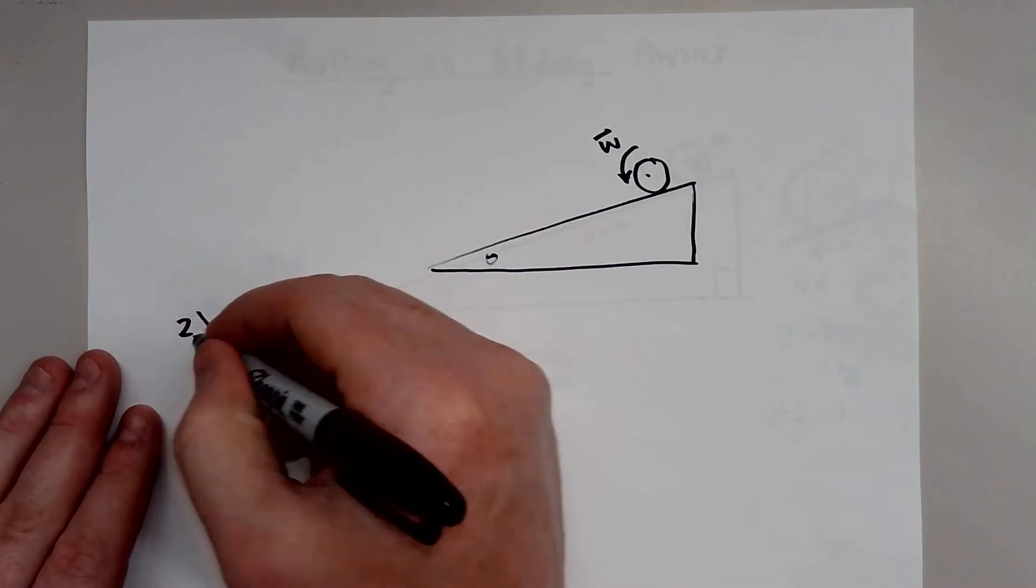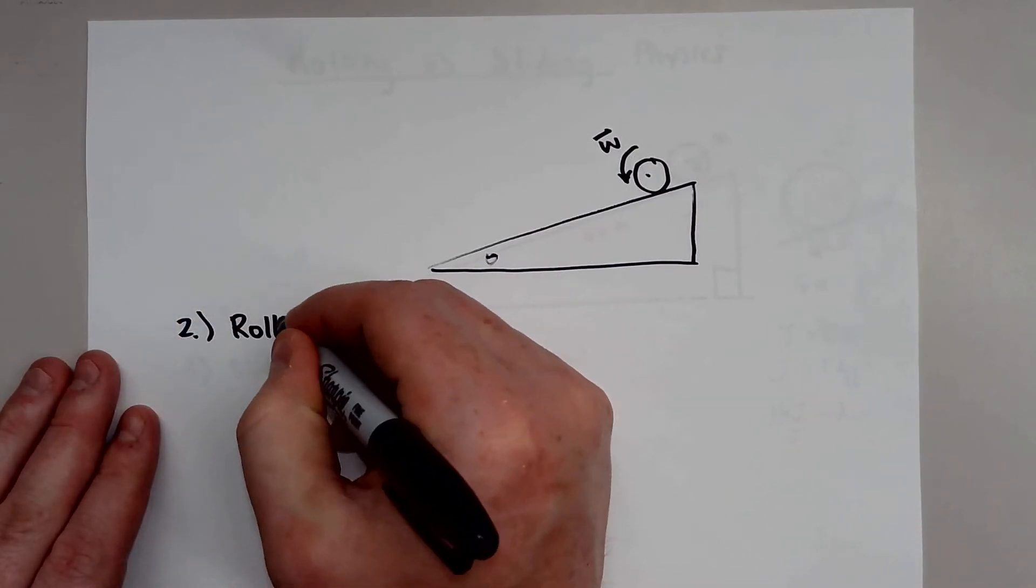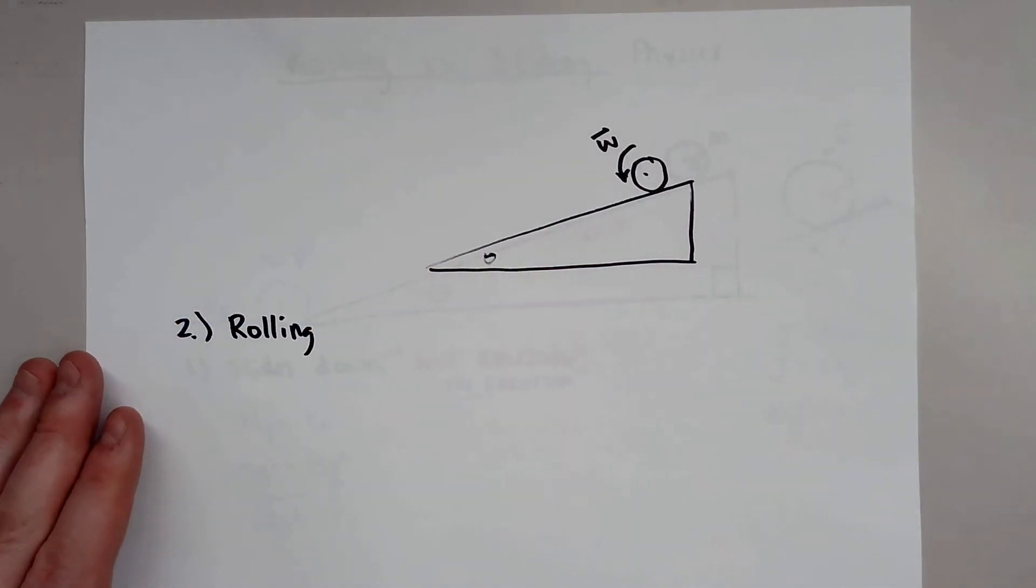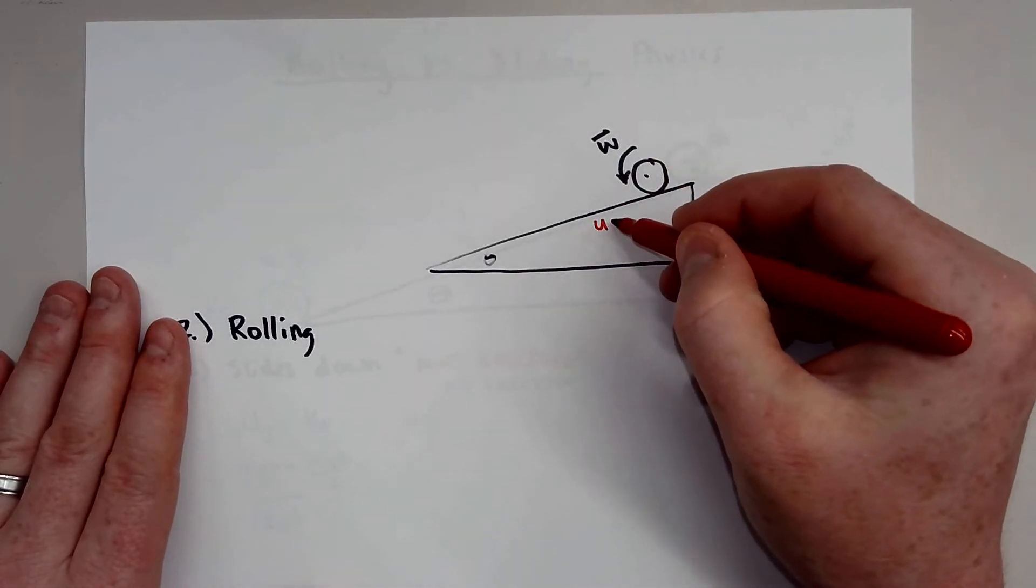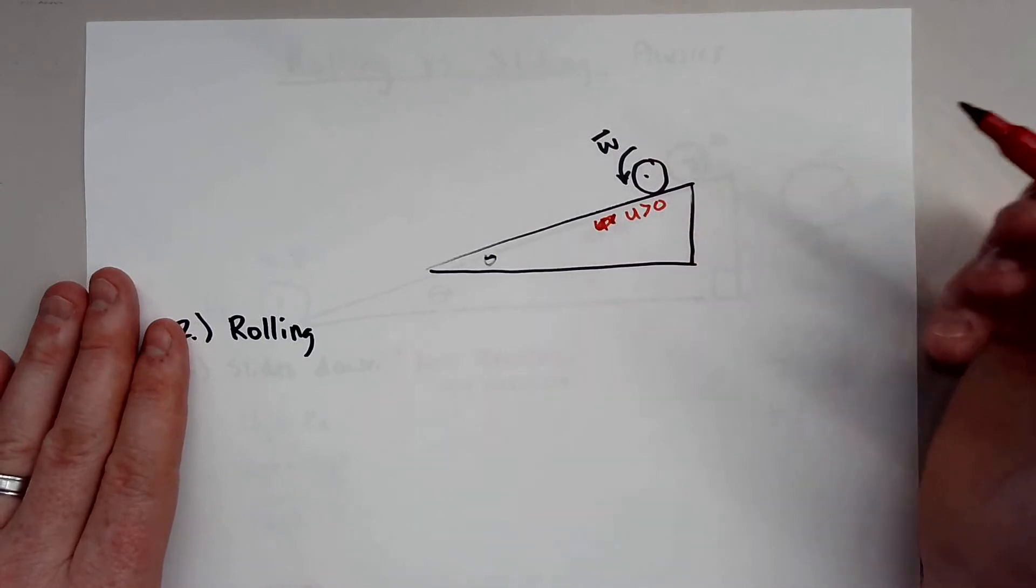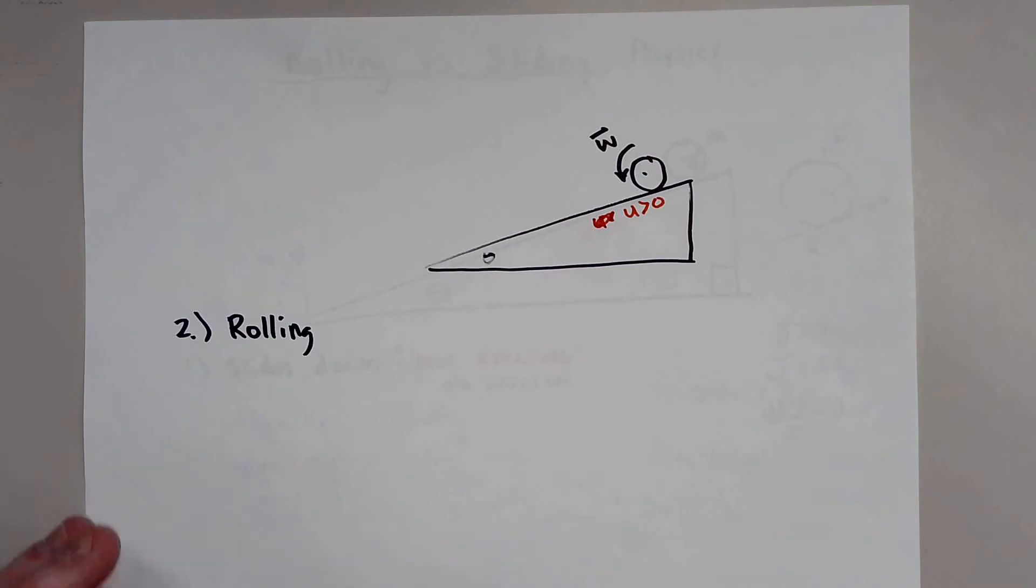So now it does have some angular velocity as it rolls down the ramp. So the question is, what's the difference between rolling? Now, in order for this object to roll, like we talked about,